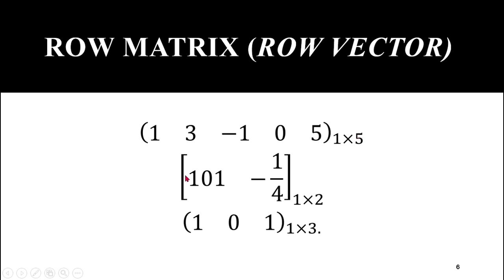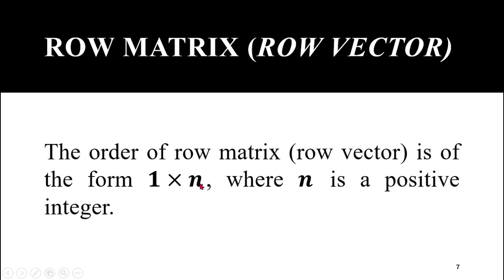Similarly, this matrix contains one row and two columns, so it is again a row matrix of order 1×2. This third matrix also has a single row and three columns, so it is again a row matrix or row vector of order 1×3. You can observe and conclude that the order of a row matrix is of the form 1×n, where n is a positive integer representing the number of columns in that matrix.